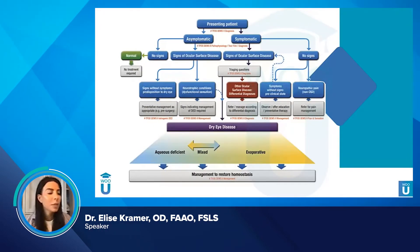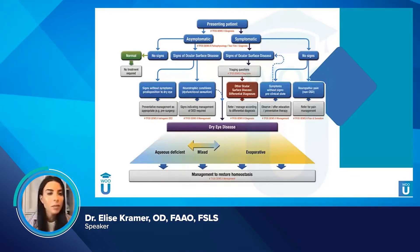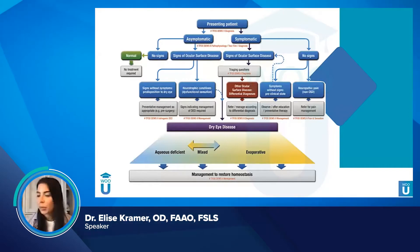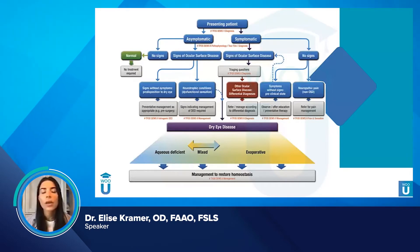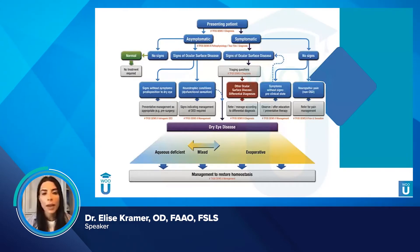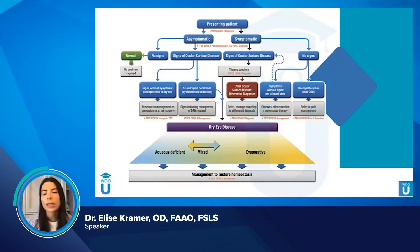If you have a presenting patient, we can start on the left side of this flow chart. If the patient is asymptomatic and there are no signs, the patient is normal — done. But if they're asymptomatic and they have signs of ocular surface disease, you're thinking one of two things: either stain without pain, which we think of as neurotrophic keratitis, or they have signs without symptoms because they're predisposed to dry eye.